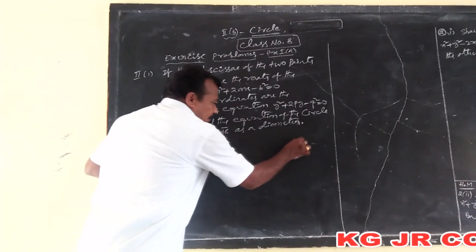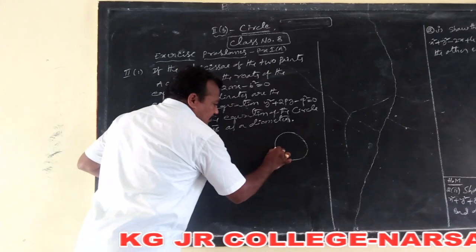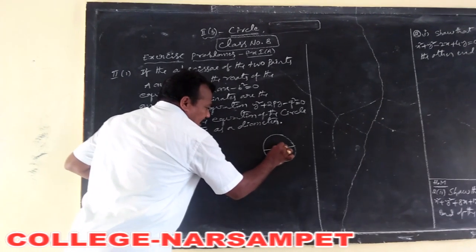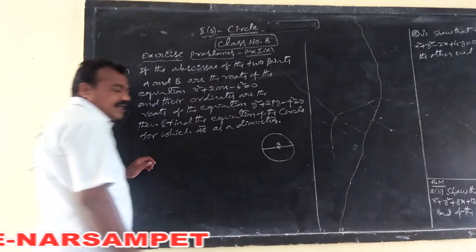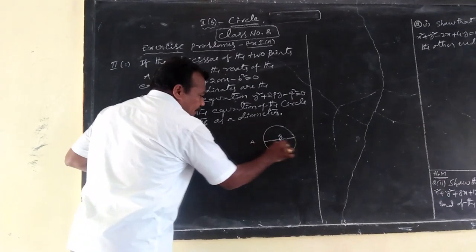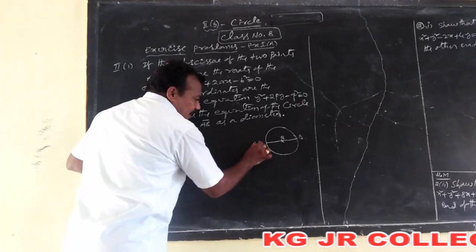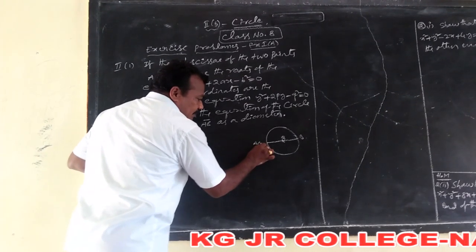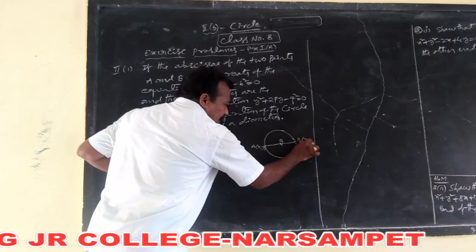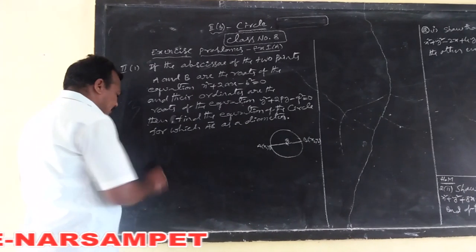Now students, here is the rough diagram. The diameter is passing through the center of the circle, and A and B are the end points of the diameter. A has coordinates x₁, y₁ and B has coordinates x₂, y₂.